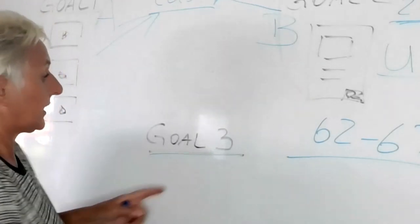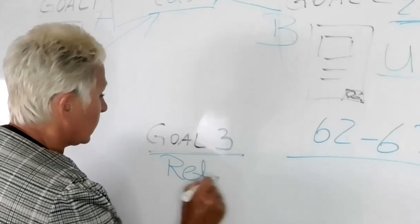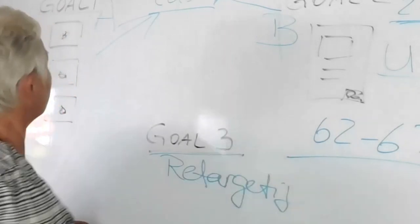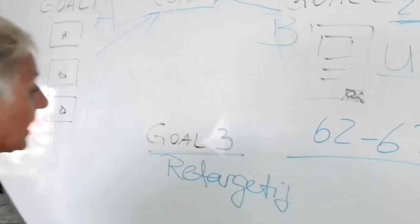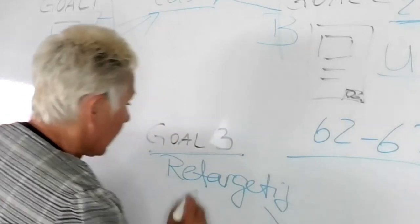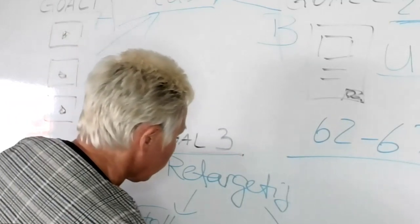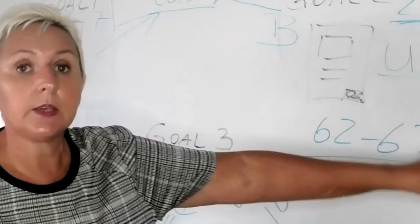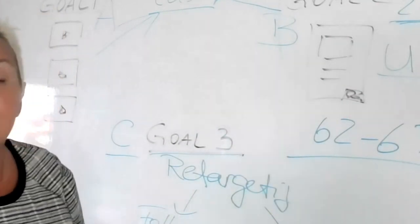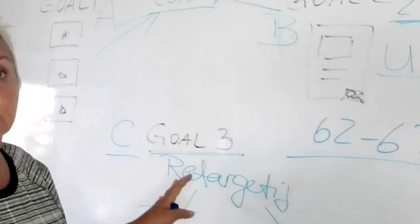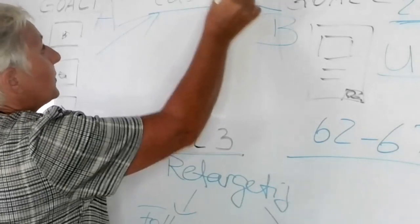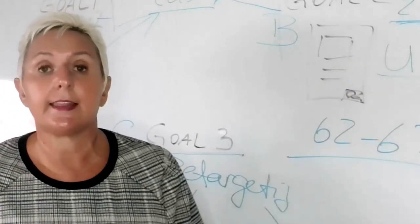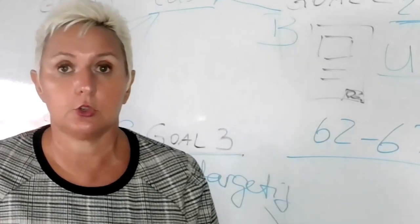That's where our goal number three comes in — we want to start retargeting. We are retargeting everyone whose life we touch, whether through lead generation or watching our videos. We want to have a nurture sequence and a follow-up sequence in place, going back to all the people we reach. Our C is where we start creating conversations that turn into closing. That is our ABC strategy — build awareness, build relationships, then start conversations that convert into closing.